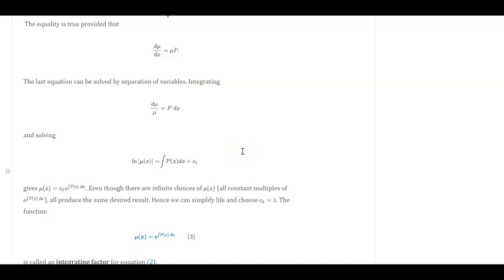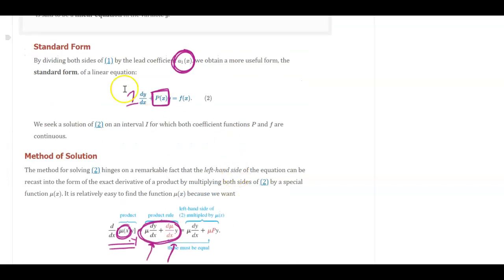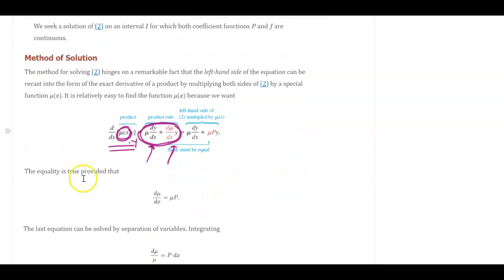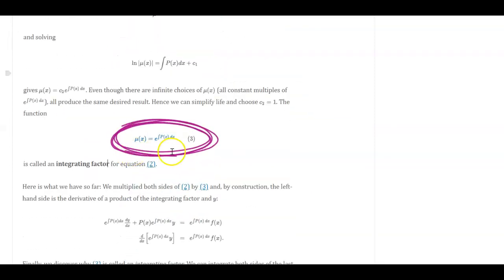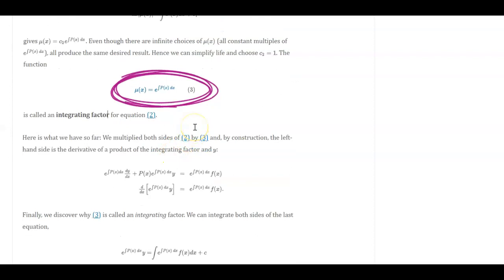The key here is we're going to let that mu function be equal to e to the integral of p of x dx, where p of x is this standard form p of x. When you do that, you have then found that mu that goes right here. That is what we call our integrating factor.